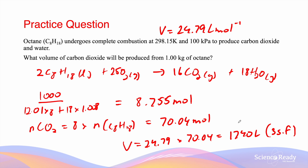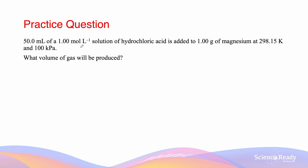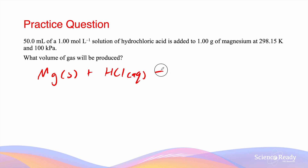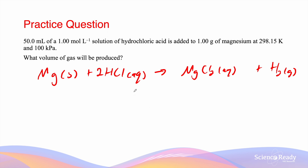For this question we're reacting 50 mL of a 1 mol/L hydrochloric acid solution with 1 gram of magnesium at RTP, and the question asks what volume of gas will be produced. The equation is: Mg(s) + 2HCl(aq) → MgCl₂ + H₂(g). This question is difficult because we're given limited amounts of both substances, so we need to determine the limiting reagent first.